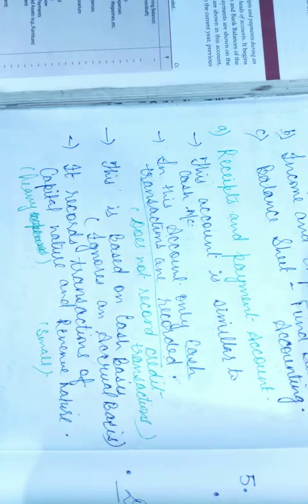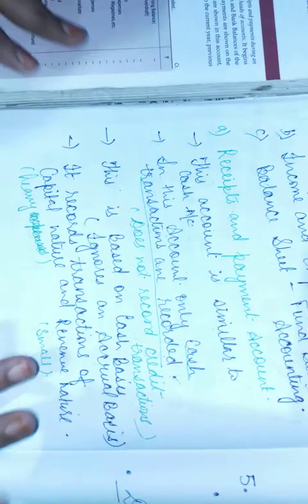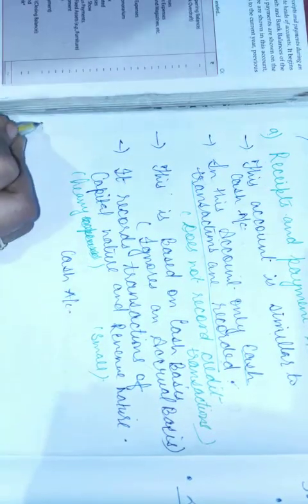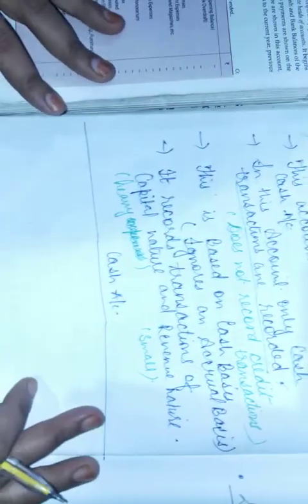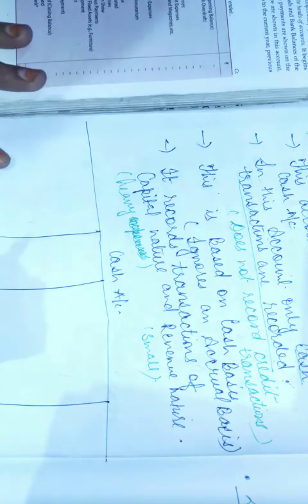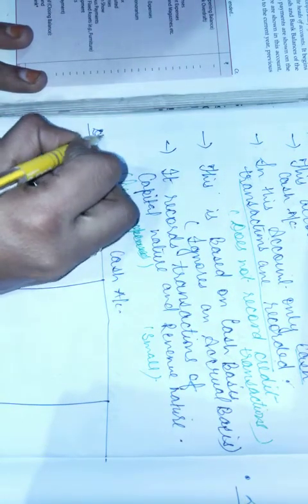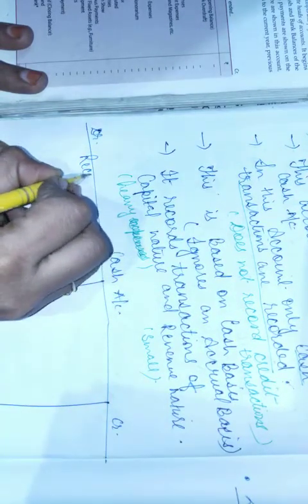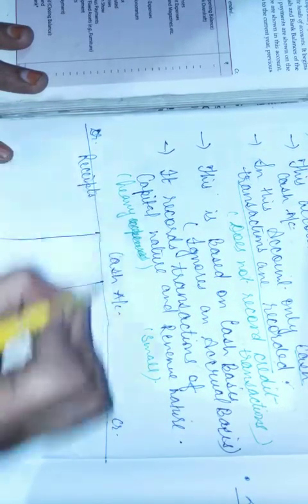This account records transactions of capital nature and revenue nature. The format of this account has a debit side which is called receipts and a credit side which is called payments.